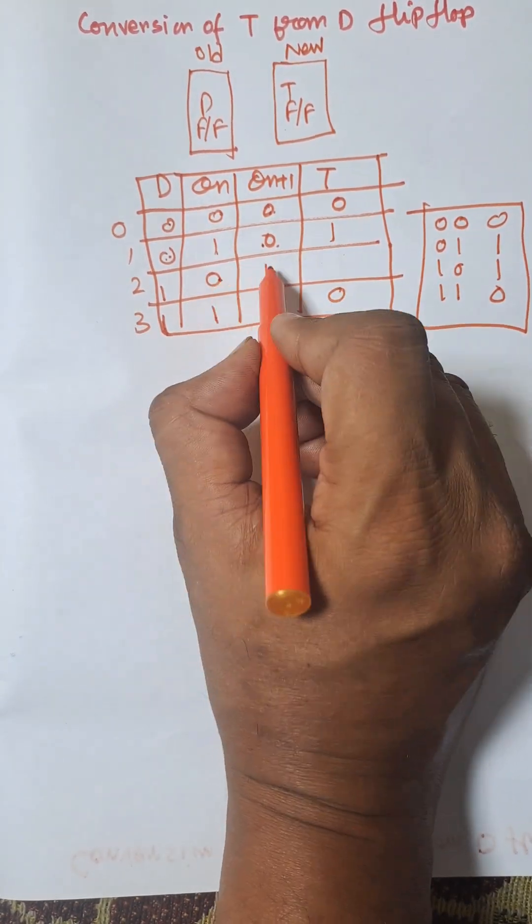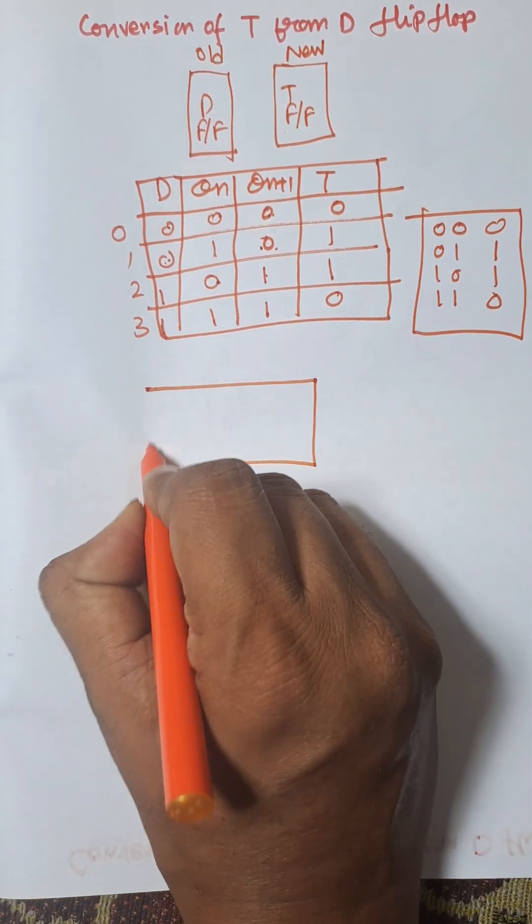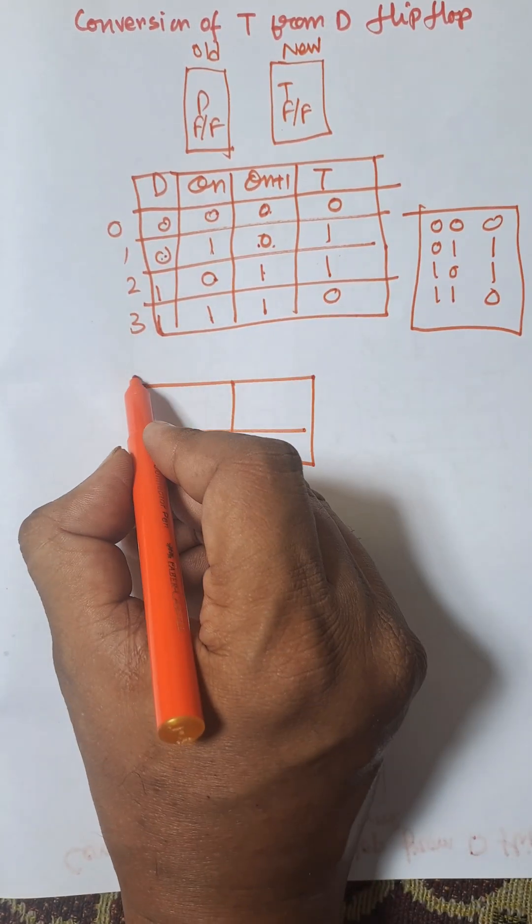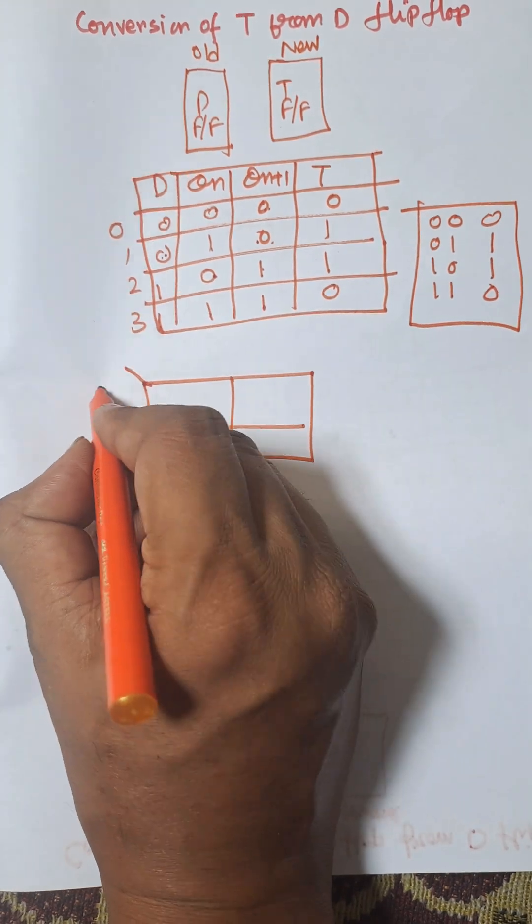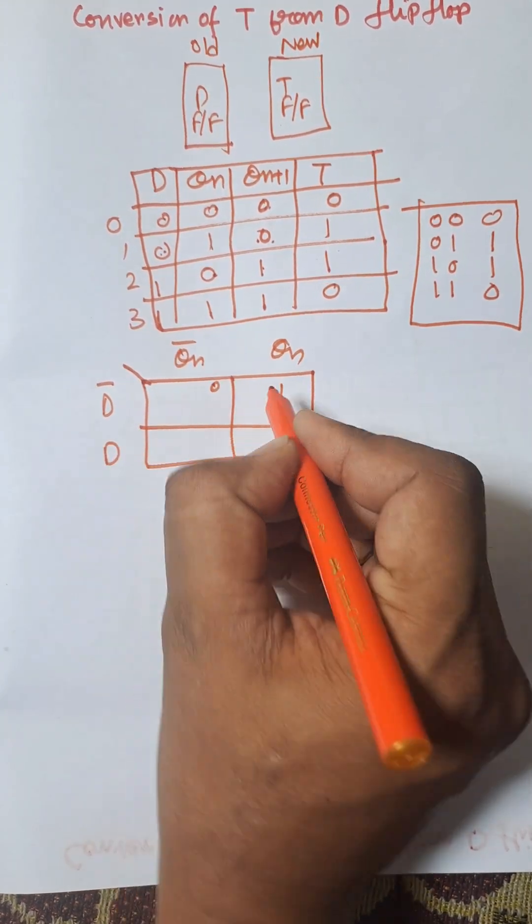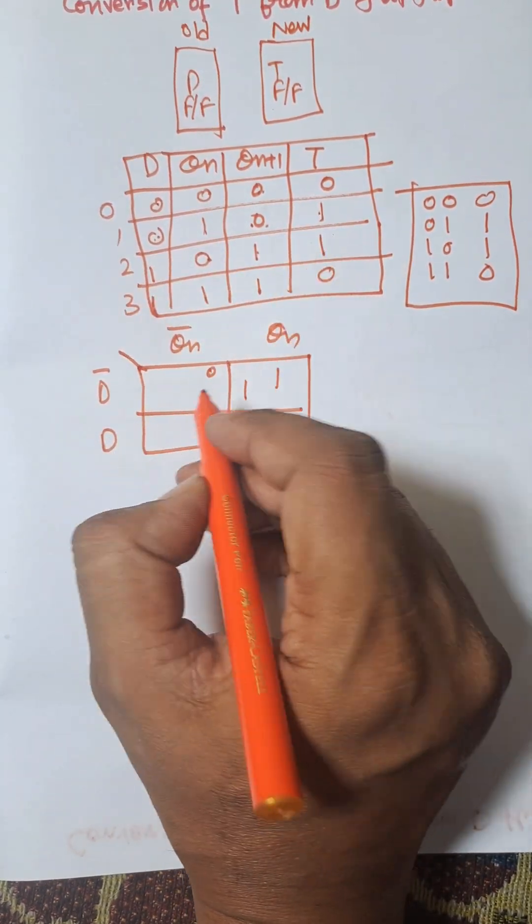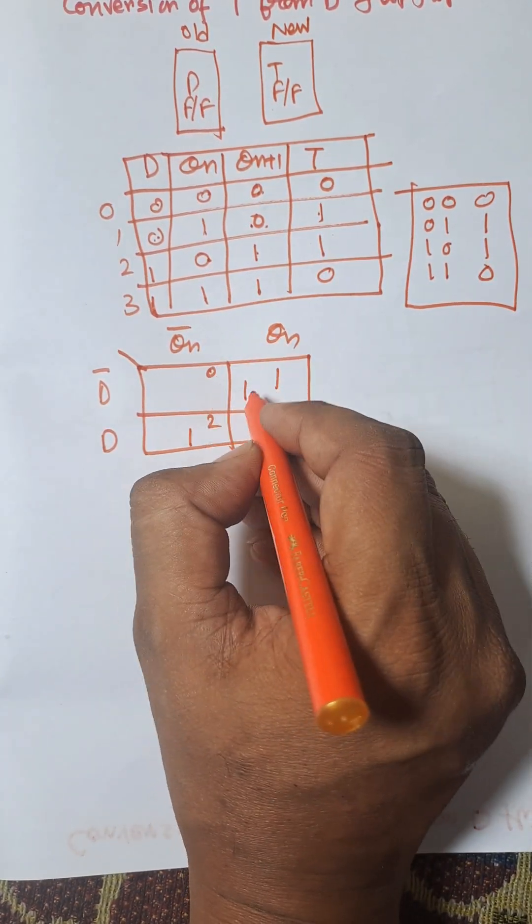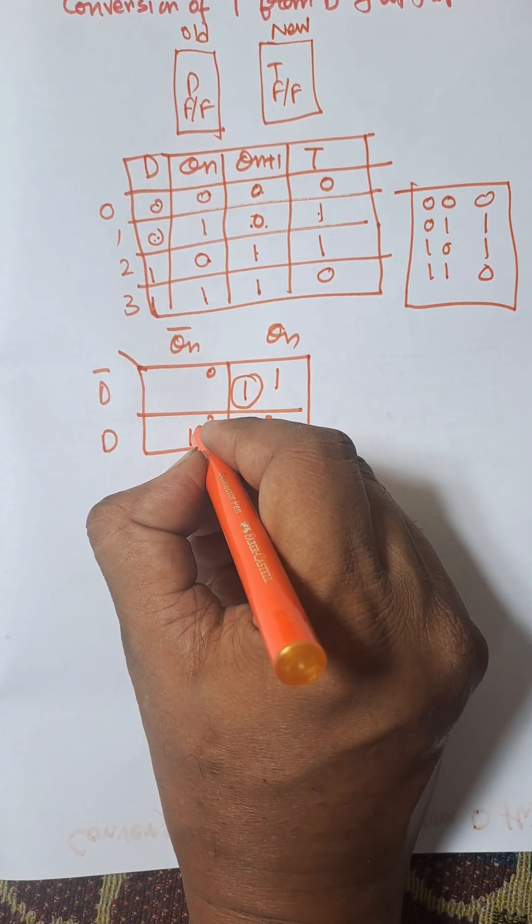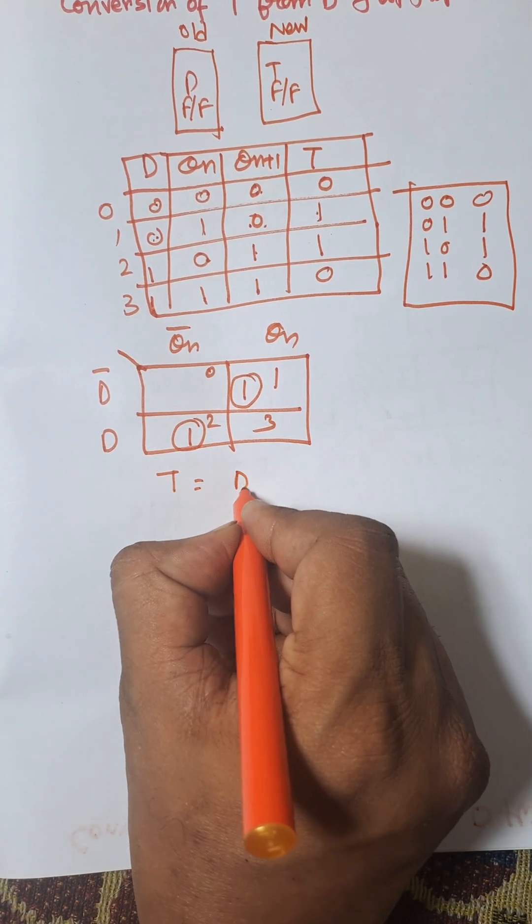Now we need to construct the K-map for T flip-flop. This two-variable K-map has D bar and D on one axis, Qn bar and Qn on the other - positions 0, 1, 2, 3. In position 1 there is one minterm and in position 2 there is one. No grouping is possible, so T equals D bar Qn plus D Qn bar.